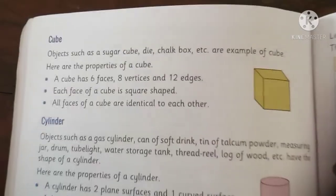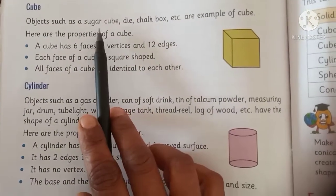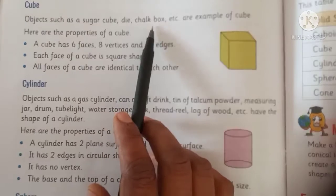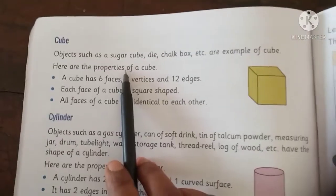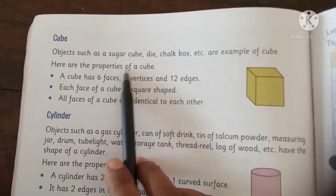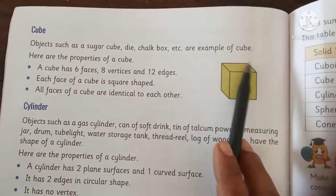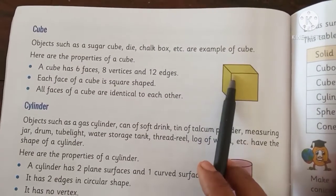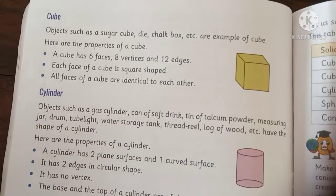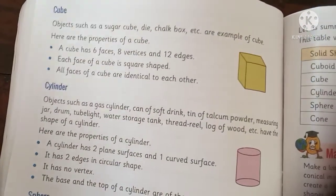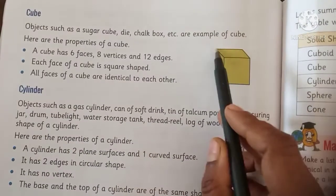Now moving to next. Objects such as your sugar cube, die, chalk box, etc. are examples of cube. In a cube all the sides are same — all the faces are identical, all the edges are identical. But in cuboid children the sides are not same, the edges are not same. In a cube we have all the edges identical.